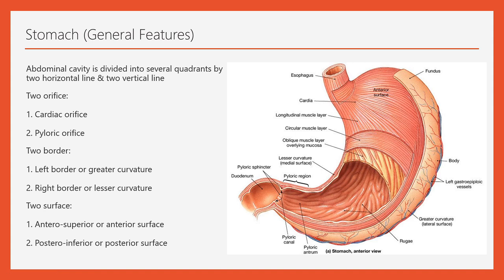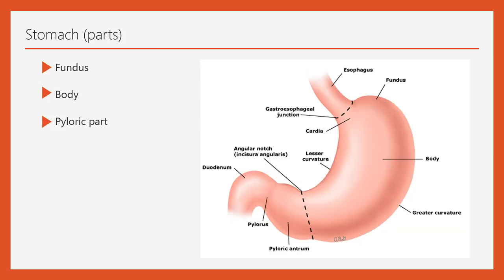The stomach has two borders: the right border, known as the lesser curvature, which is concave, and the left border, known as the greater curvature, which is convex. There are also two surfaces: the anterior superior surface, which is the surface we can see from the front, and the posterior inferior surface, which lies behind.